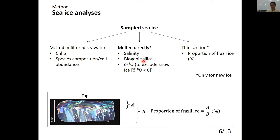At new ice stations, seawater was collected from 8-meter depth for chlorophyll, biogenic silica, and formalin-fixed samples for microscopy. At some stations, first-year, multi-year, or brush ice was found around new ice. For sea ice analysis, sea ice was divided into three parts: one was melted in filtered seawater to measure chlorophyll and species composition and cell abundance; others were melted directly to measure salinity, biogenic silica, and stable oxygen isotopes. Snow ice was removed from further analysis.